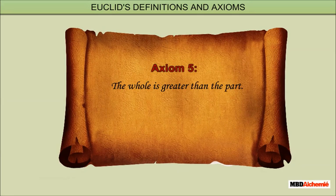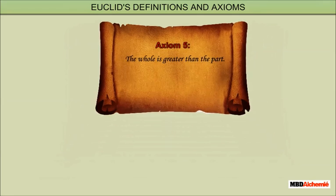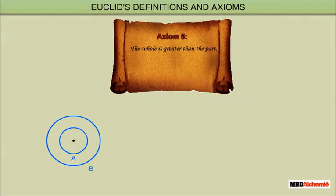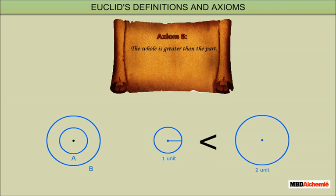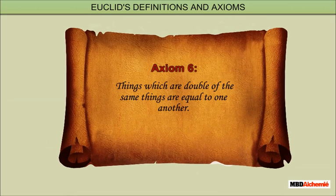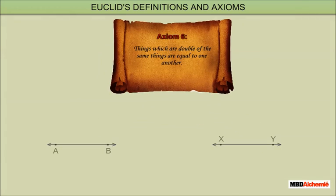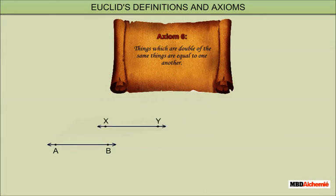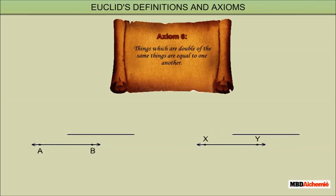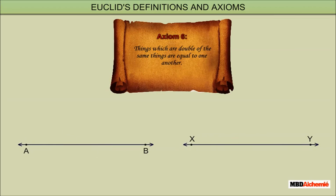Axiom 5: The whole is greater than the part. For example, circle A is a part of circle B, which means the area of circle B is greater than the area of circle A. Axiom 6: Things which are double of the same things are equal to one another. Example: consider two equal lines AB and XY, then 2AB is equal to 2XY.